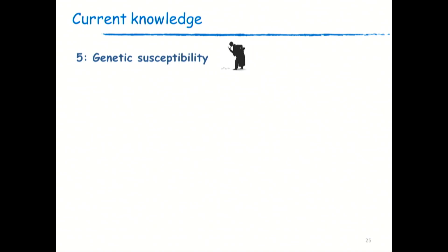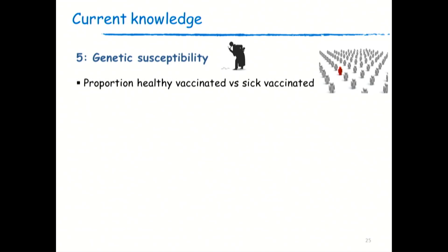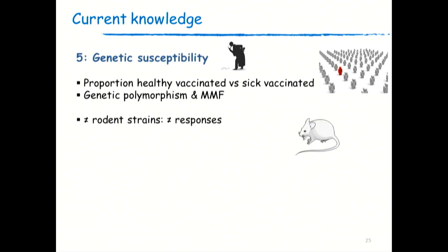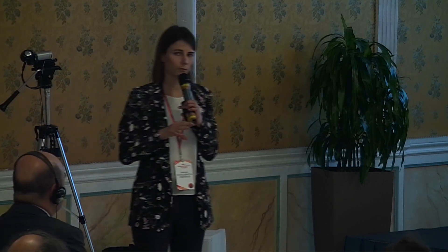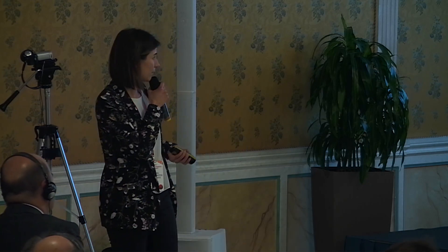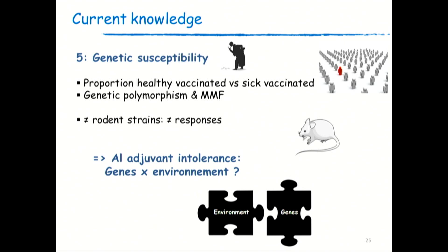Finally, I'd like to speak a few minutes about genetic susceptibility, which we are working on today. We have some clues in favor of genetic susceptibility: first, the difference between the number of healthy vaccinated individuals and those who develop adverse effects; second, we have observed genetic polymorphisms in our MMF patients; and when we use different strains of rodents, we observe different responses in terms of kinetics — sometimes very fast translocation into the brain, sometimes highly delayed translocation. We think that aluminum adjuvant intolerance can be viewed as a combination between genes and environment.